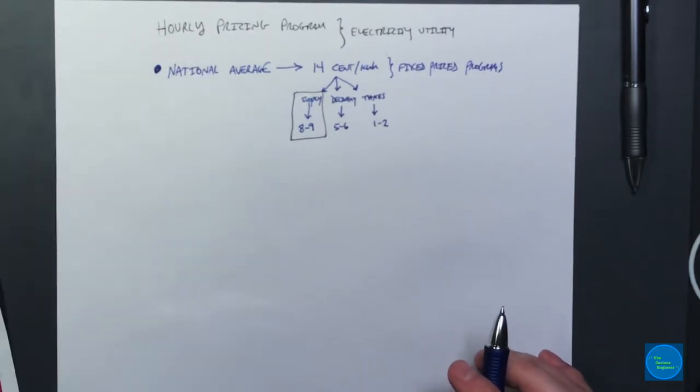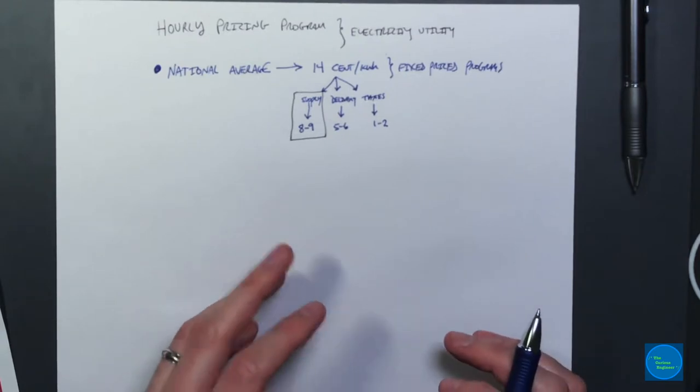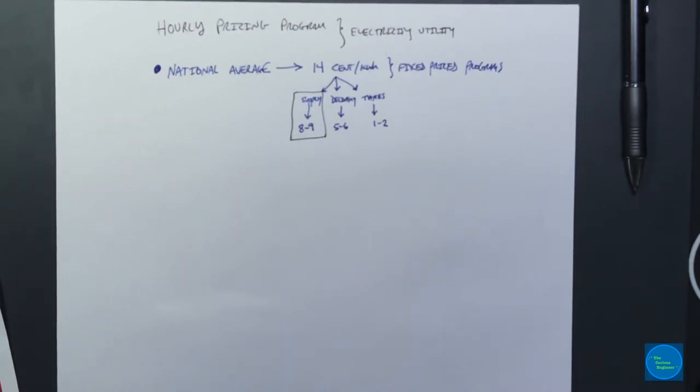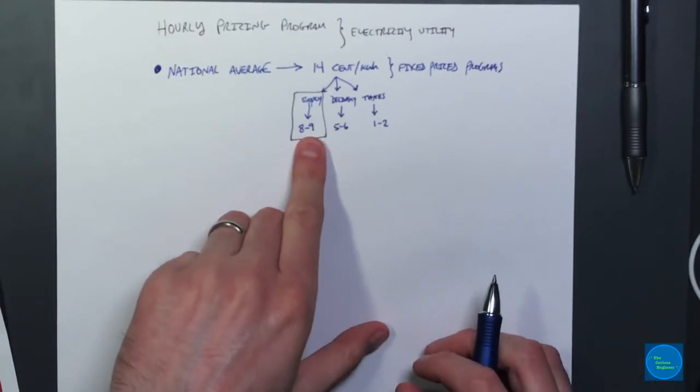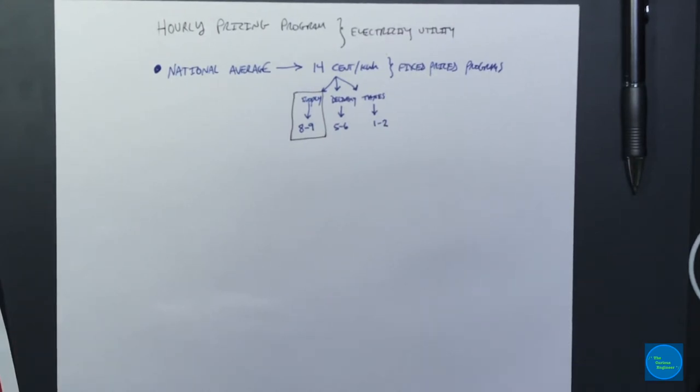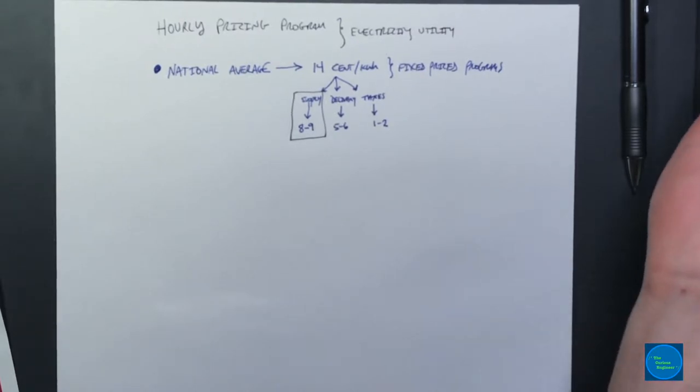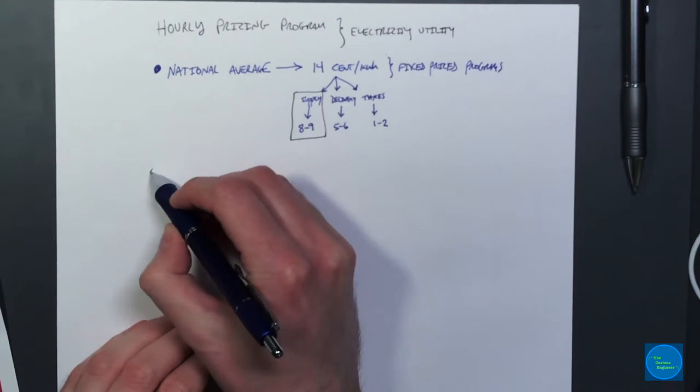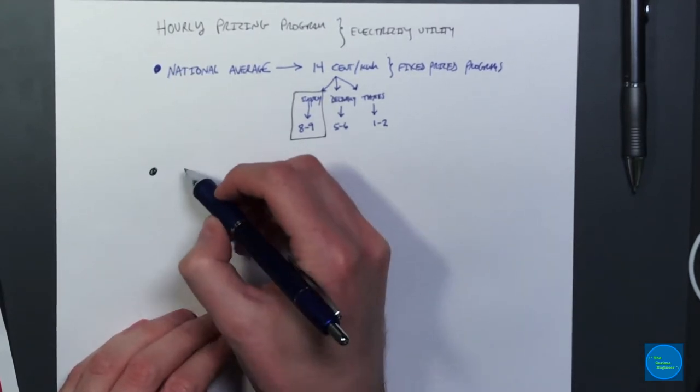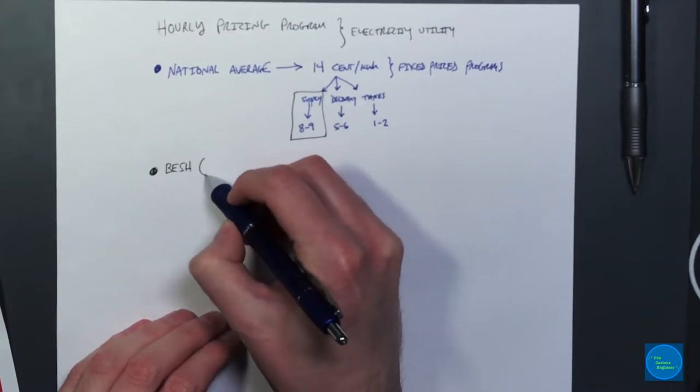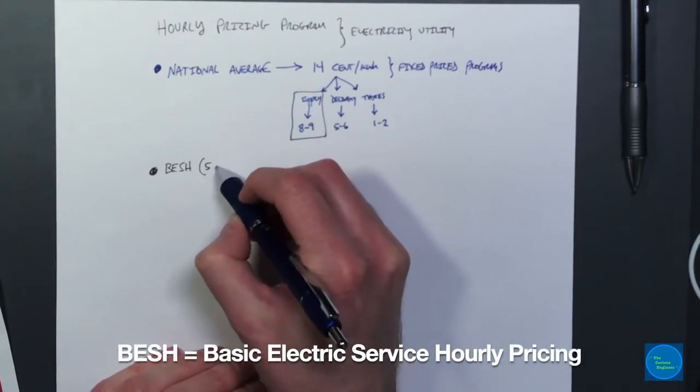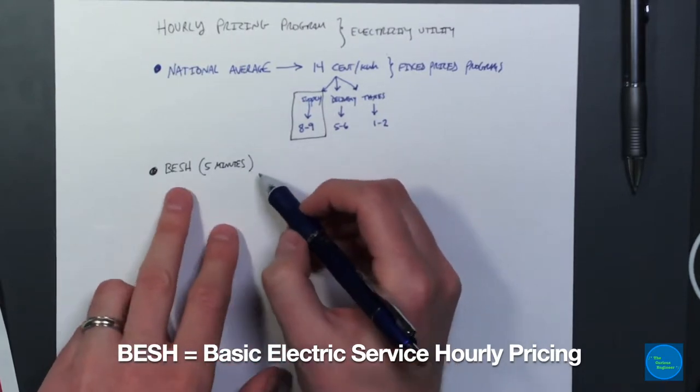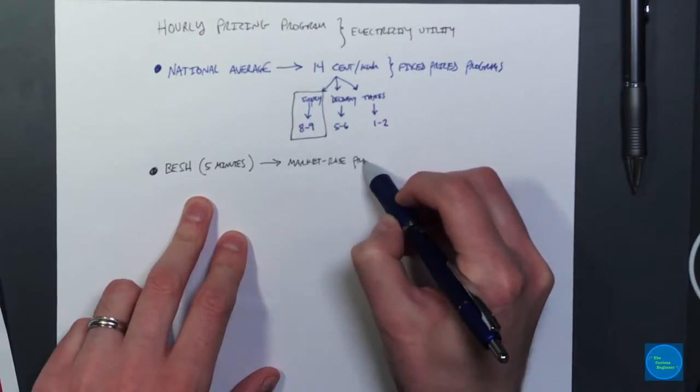The hourly pricing program focuses on the supply portion. The delivery and the taxes pretty much stay the same, but the supply portion can be changed such that you're not using a fixed rate no matter what time of day you're using the energy. The reality is that when utility companies are generating energy, there's a market for that energy. During the day at 4 o'clock on a hot summer afternoon, there's high demand and limited supply, so the cost goes up. But other times of day where it's not 95 degrees outside and it's 8 or 9 o'clock at night, there's very little demand, so the cost of electricity plummets.